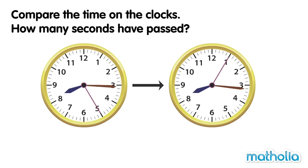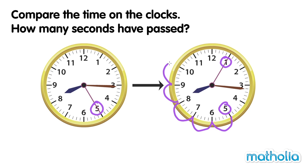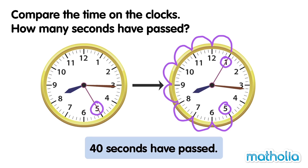How many seconds have passed? The second hand has moved from 5 around to 1. 5, 10, 15, 20, 25, 30, 35, 40. 40 seconds have passed.